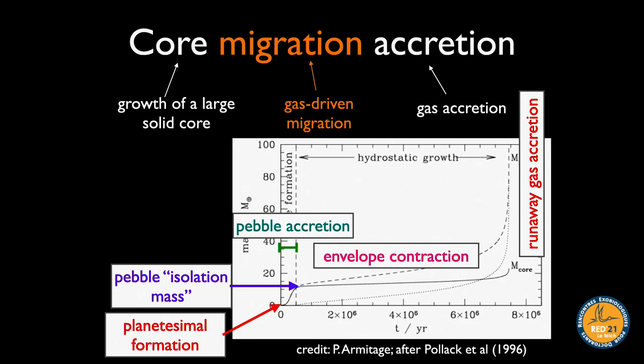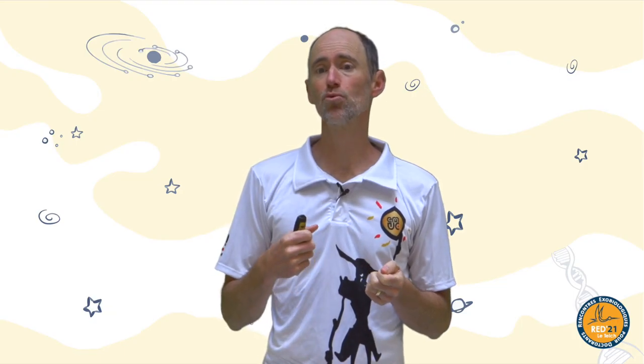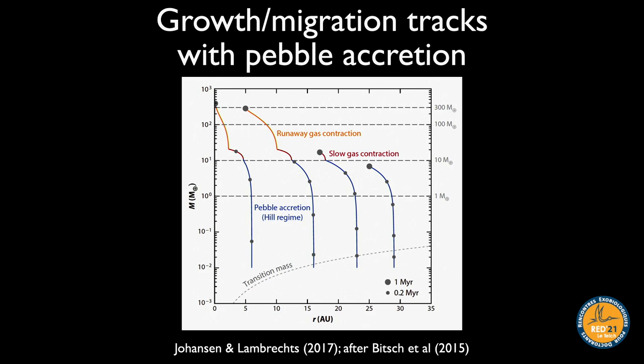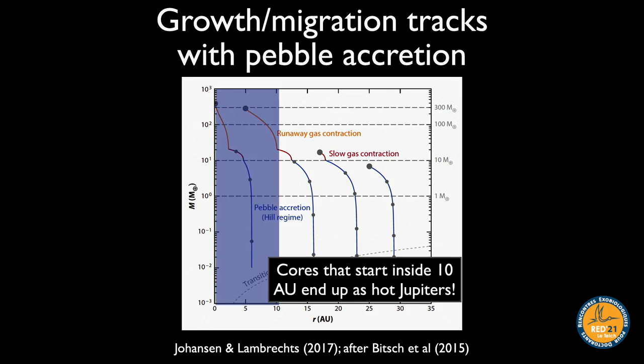When the core mass roughly equals the mass of gas piled onto the planet, runaway gas accretion is triggered. Very quickly the planet can grow from a Neptune to a Jupiter, carving a gap in the disk. Migration must be accounted for as soon as the object reaches a few Earth masses. Growth tracks in a simple analytical model show objects starting as large planetesimals, growing by planetesimal and pebble accretion, then migrating inward — everything forming inside 10 AU ends up as a hot Jupiter.